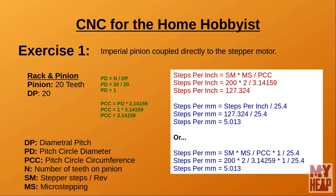To determine steps per millimeter, take the steps per inch and divide by 25.4: 127.324 / 25.4 = 5.013 steps per millimeter. Alternatively, use the formula directly: (steps per revolution × microstepping) / (pitch circle circumference × 25.4) = (200 × 2) / (3.14159 × 25.4) = 5.013 steps per millimeter. Notice the small values — this is why gear reduction and high microstepping values are used with rack and pinion systems to avoid loss of precision.